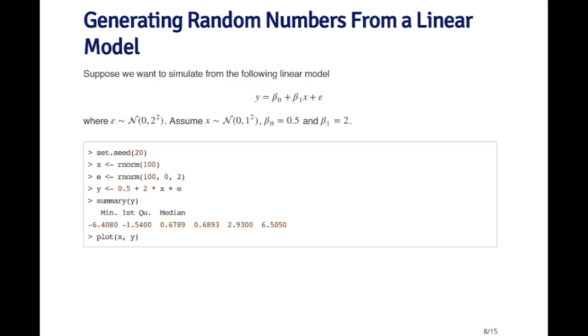So I've got a very simple linear model here. It has a single predictor x, and it's going to have random noise, what I call epsilon, that has a normal distribution with standard deviation 2.